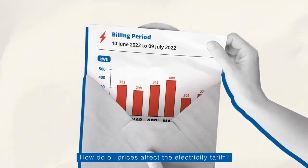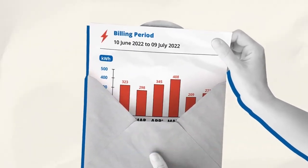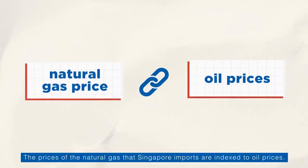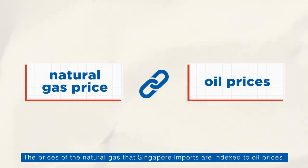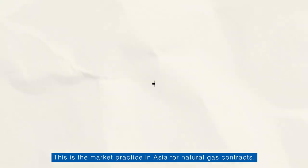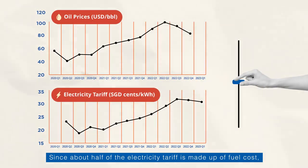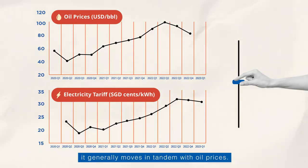How do oil prices affect the electricity tariff? The prices of the natural gas that Singapore imports are indexed to oil prices. This is the market practice in Asia for natural gas contracts. Since about half of the electricity tariff is made up of fuel cost, it generally moves in tandem with oil prices.